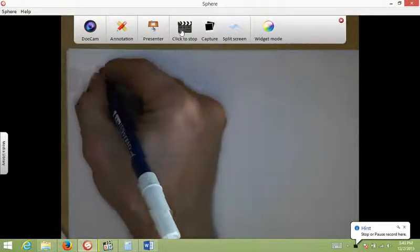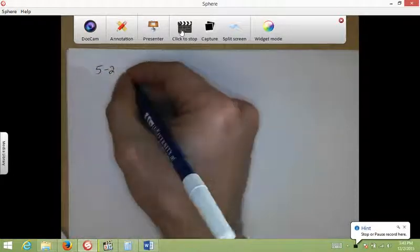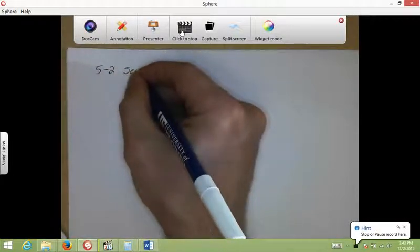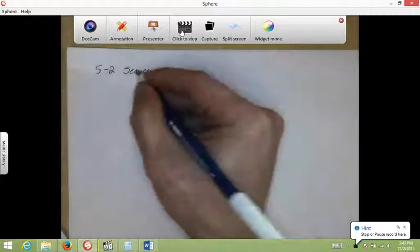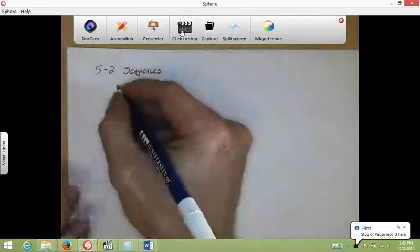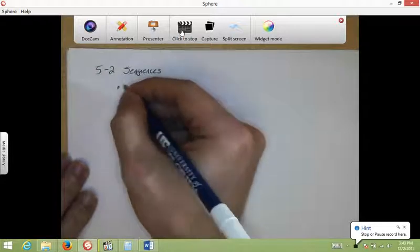All right boys and girls, so this is chapter 5, section 2. The name of this section is called Sequences. So let's figure out what a sequence is and get these definitions out of the way.